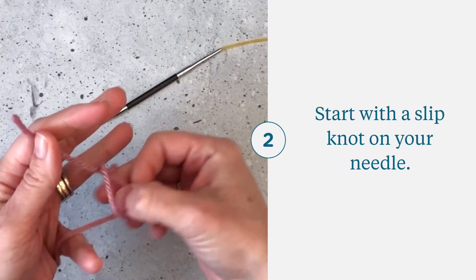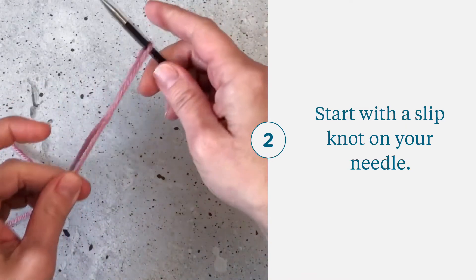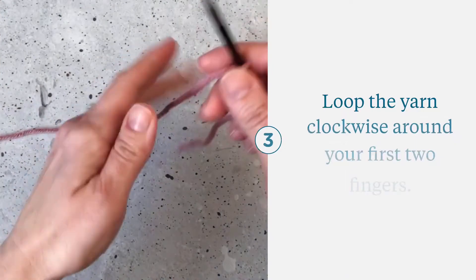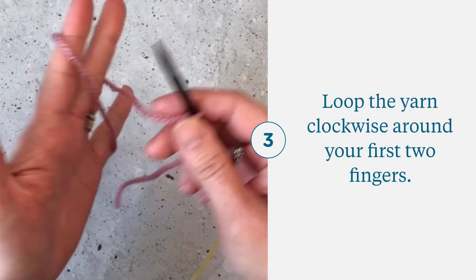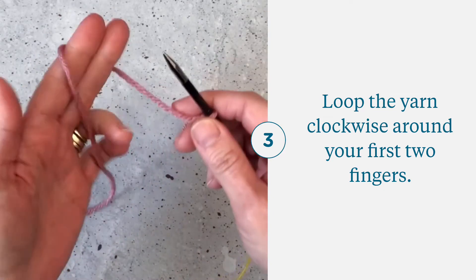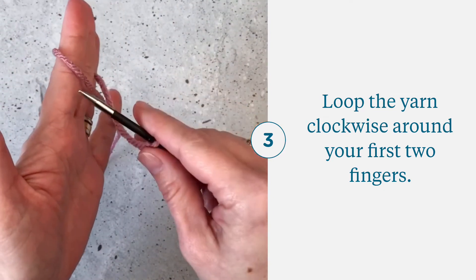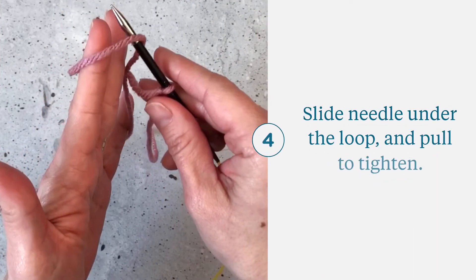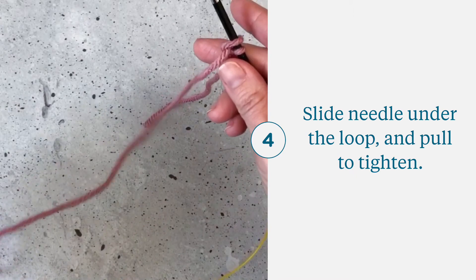Okay, so I'm going to start with a slip knot and slide that on my needle. All right, so for this, I'm just going to make a loop around my two fingers. Do that again, going up and over, that's clockwise. I put my needle under here and I'm going to pull and that's it.